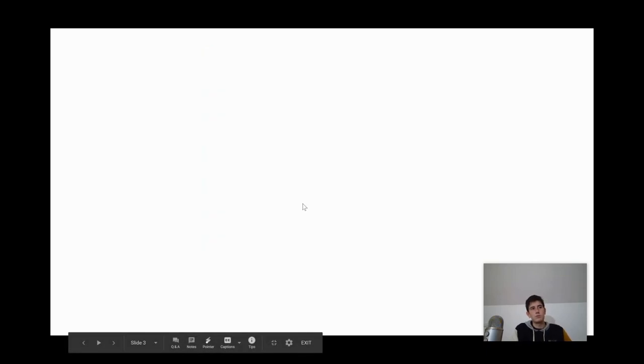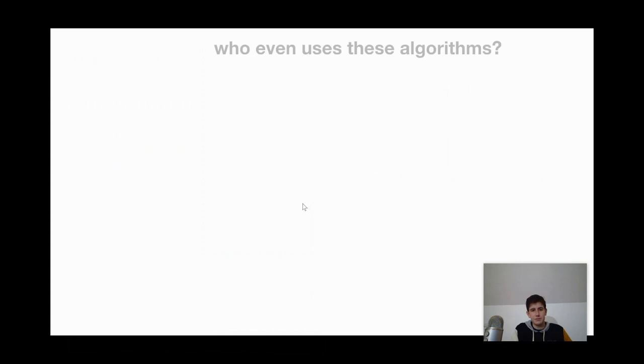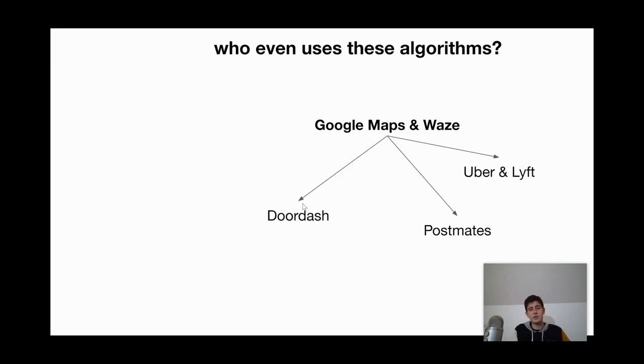So how is this even useful in real life? Well, a couple of really major apps use these algorithms. And that's navigation apps like Google Maps and Waze. And then subsequently DoorDash, Postmates, and Uber Lyft.